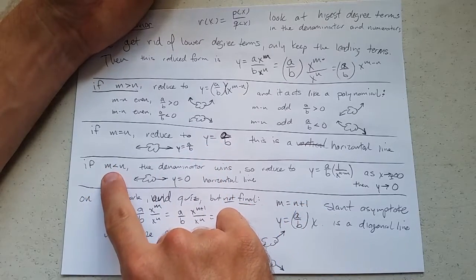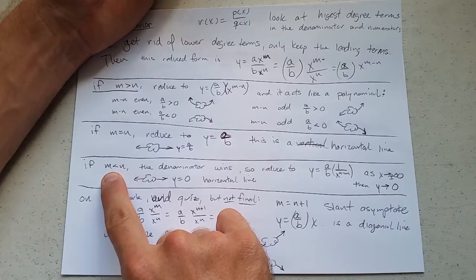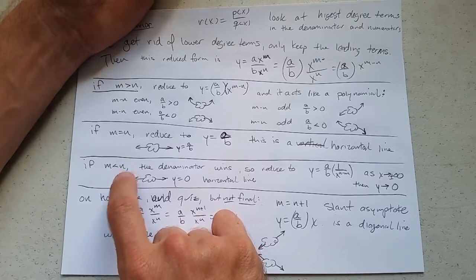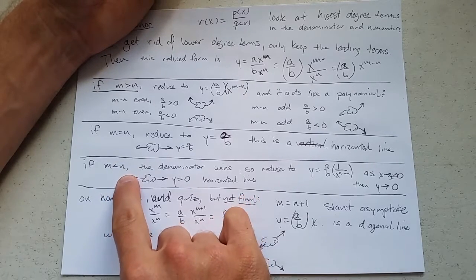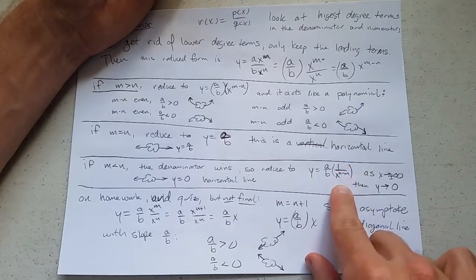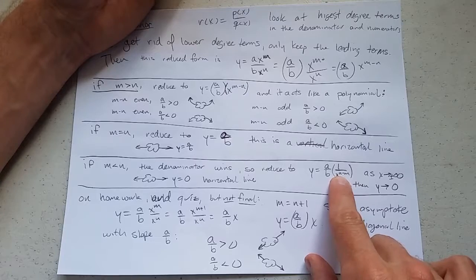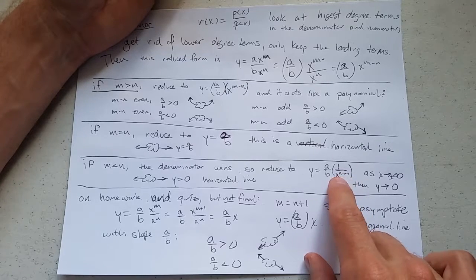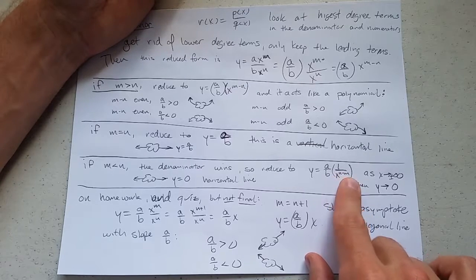If your denominator wins, so m is less than n, the n is the winner, this is new. And we're going to reduce it. We're going to write as one divided by x to the n minus m. So we said n was bigger now, so n minus m is positive.